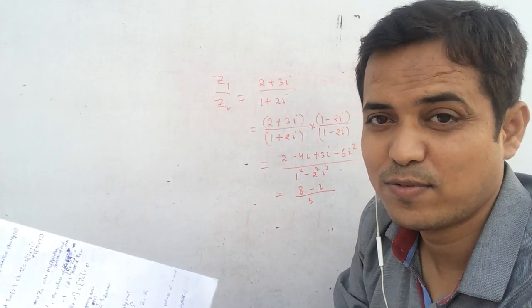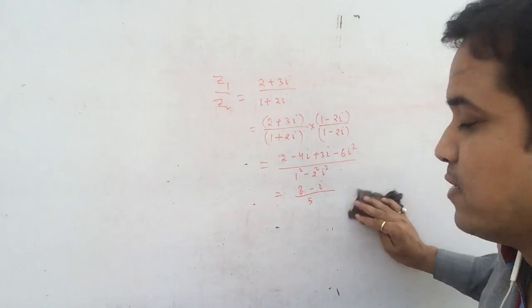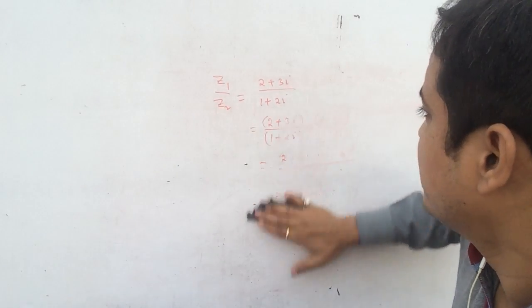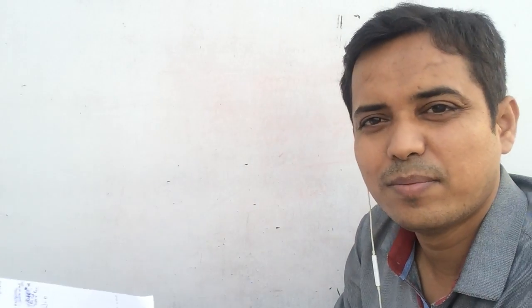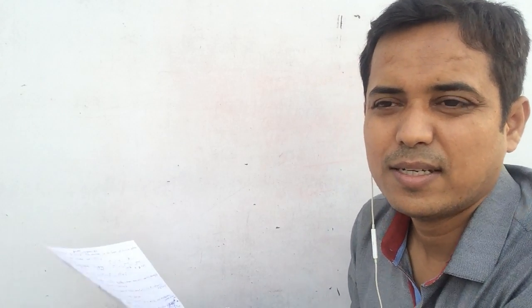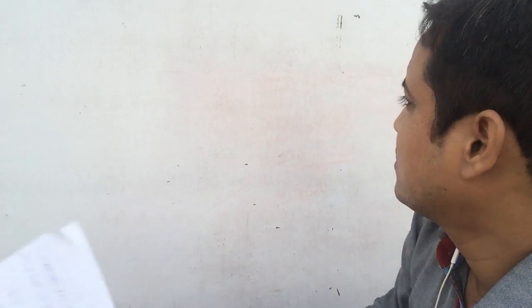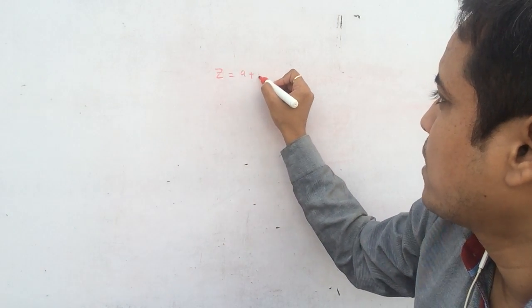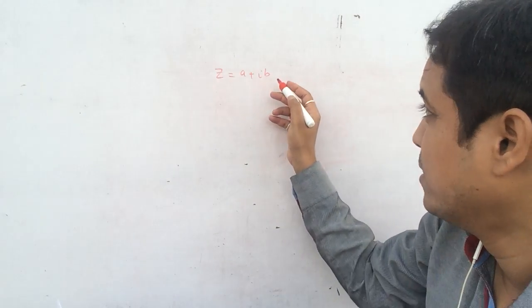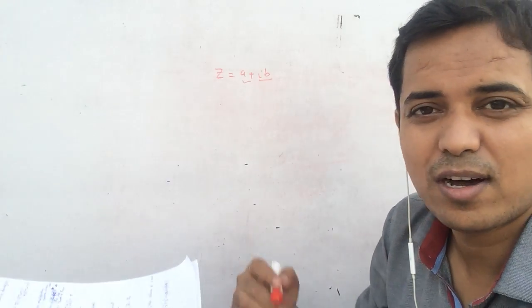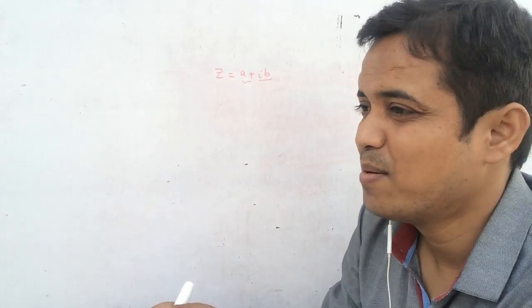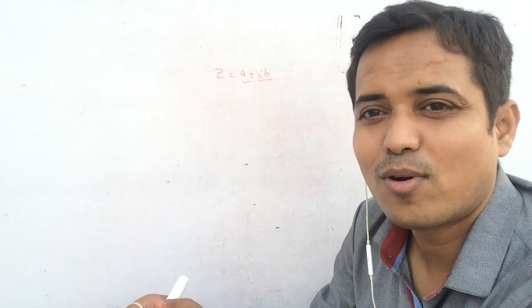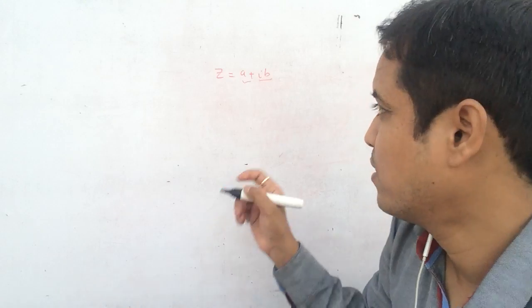Hello students, welcome to Jaswal EduMath. We were doing complex numbers here. So now we need to do something very important — we are going to do the geometric representation of the complex number. The complex number is in the form Z = A + iB. Our mathematicians represent this number not on the real plane, but on a plane they derived called the Argand plane, or Gaussian plane, or complex plane.